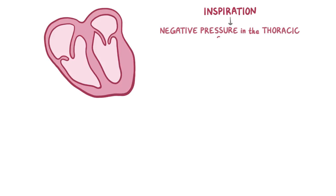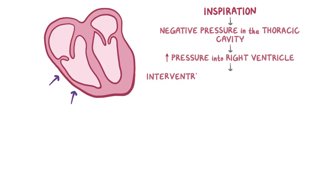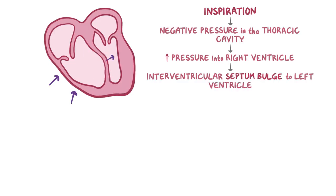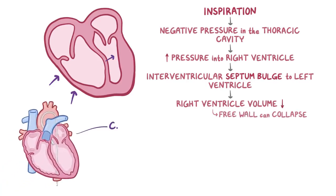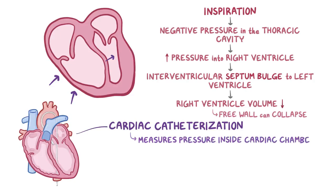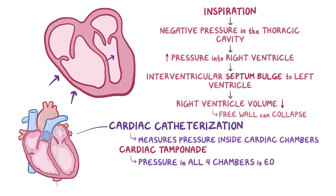During inspiration, the negative pressure in the thoracic cavity leads to increased pressure into the right ventricle, which causes the interventricular septum to bulge toward the left ventricle, leading to decreased filling of the left ventricle. At the same time, the right ventricle volume is markedly diminished and sometimes its free wall can collapse. Finally, cardiac catheterization measures the pressure inside the cardiac chambers, and in the case of tamponade, the pressure in all four chambers is equal.